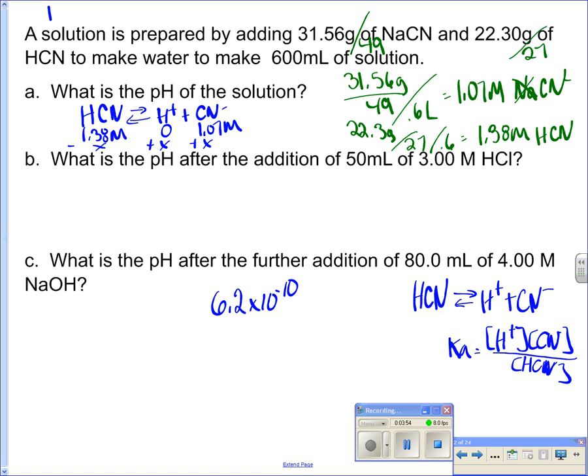So let me write that up, Ka HCN, 6.2 times 10 to the negative 10. That's going to equal, I know X, and then 1.07 plus X and 1.38 minus X. But remember, we know the deal. We know that we can just omit these X's because this Ka is so small that those X's won't matter, and so that's going to make it very easy to solve this problem.